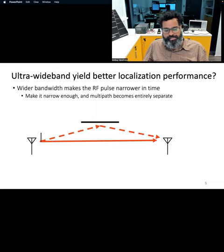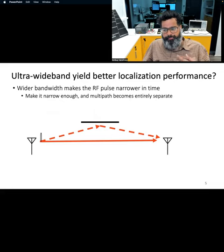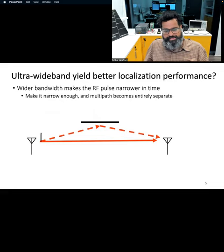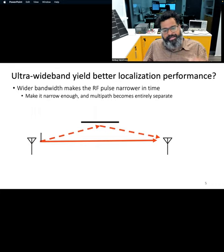As the name suggests, in ultra wideband we increase the bandwidth of the signal that is transmitted. We transmit these radio pulses over a wide band. The result is that in the time domain, these radio pulses become very narrow. With such narrow pulses, there is no smearing as the radio waves travel over multiple paths towards the receiver device. Instead, these narrow radio pulses arrive at very distinct times at the receiver device.